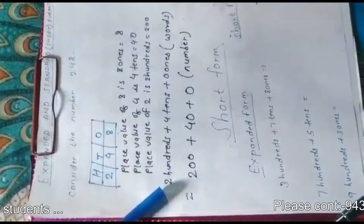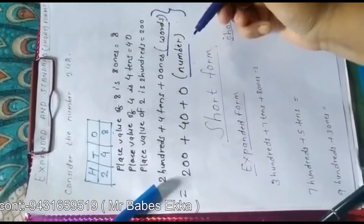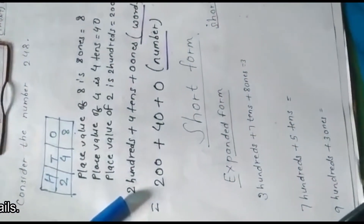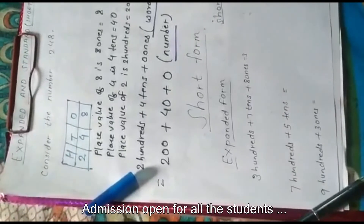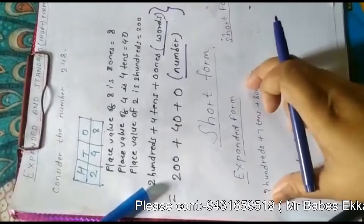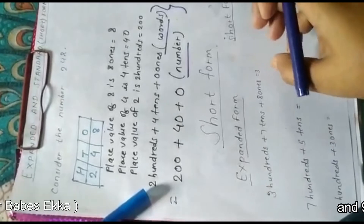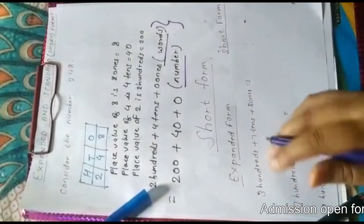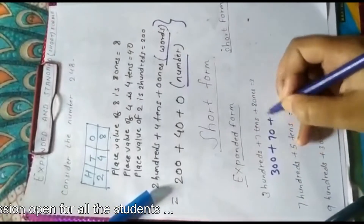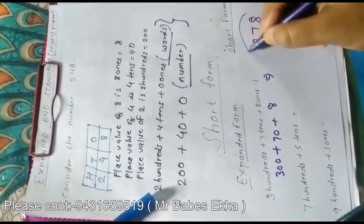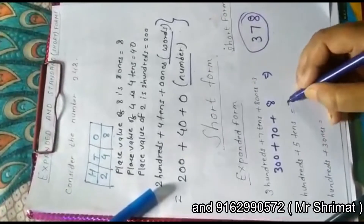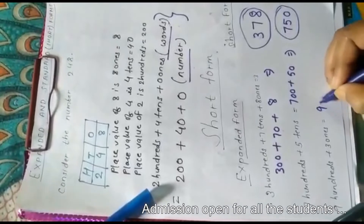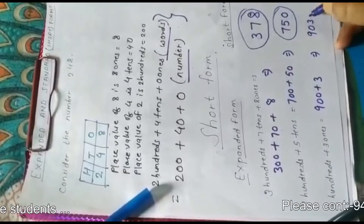In the same way, we will now understand the short form. The short form of a number is given by combining the place values of all the digits in their correct places. For example, 300 plus 7 tens value is 70, so the number is 370. Similarly, 700 plus 5 tens is 50, so the short form is 750. And 900 plus 3 ones is 3, so the short form is 903.